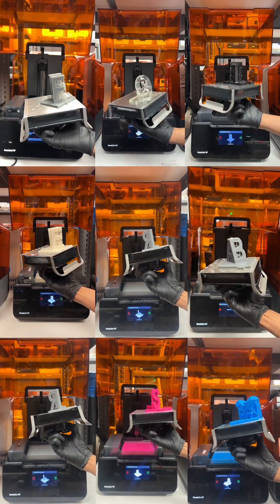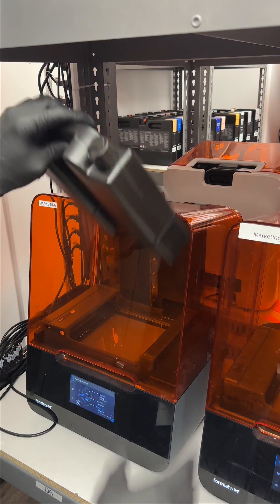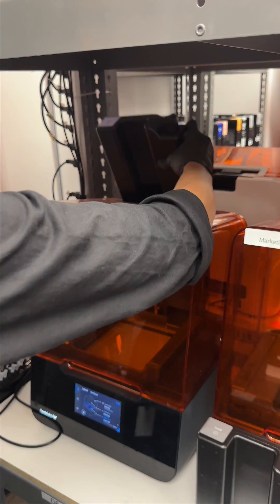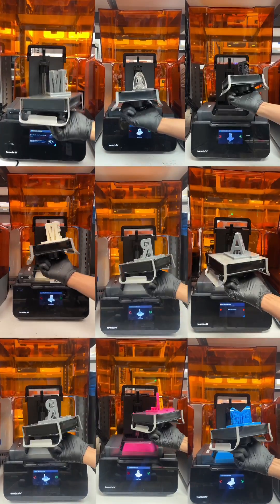As you can tell, switching materials on the Form3 Plus is extremely simple. All you have to do is swap out the resin cartridge for each resin.